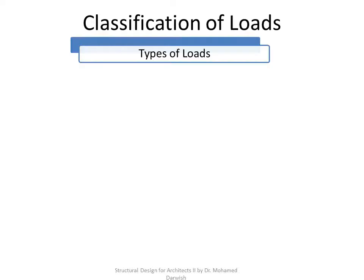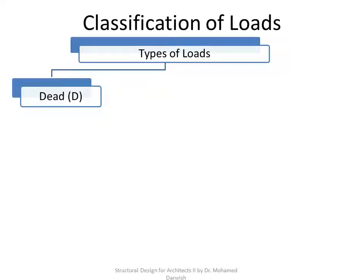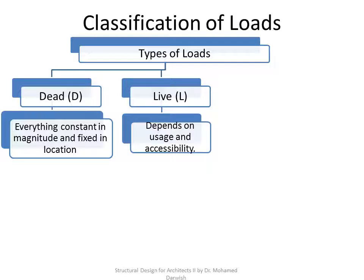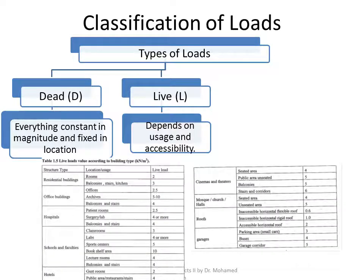Moving on to loads: loads vary depending on their type. The dead load is every load that is constant in magnitude and fixed in location, such as the weight of a wall, slab, or beam. The live load depends on the occupancy and usage. It is much less for a regular room than for a warehouse, classroom, sports center, or bookshelf area.